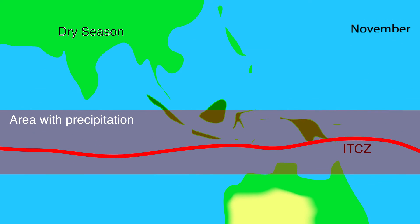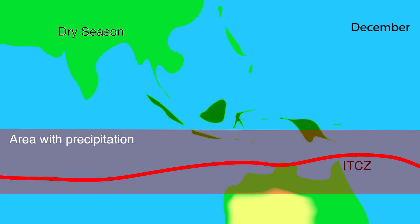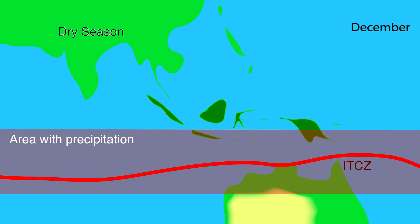After June the ITCZ moves south along with the sun. The rain season north of the equator ends while the rain season in the area south of the equator begins. In December the sun gives the most energy to the Tropic of Capricorn, causing the ITCZ to move south of the equator, which starts the rain season there.